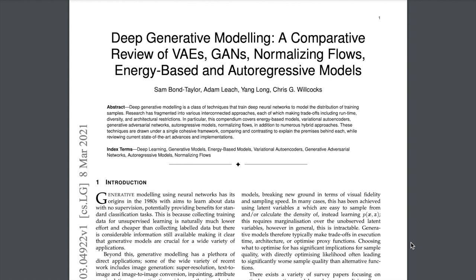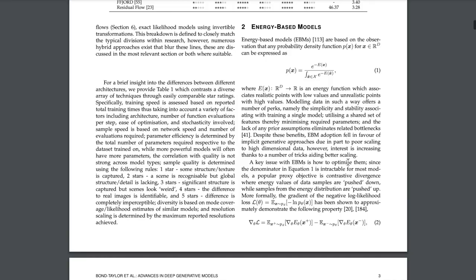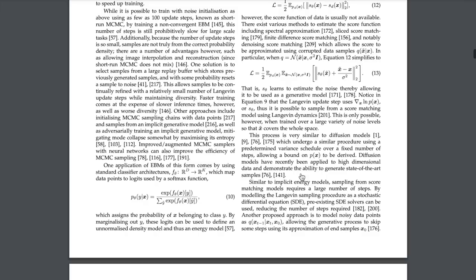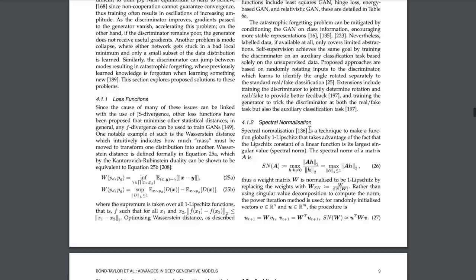Next up is a really exciting technical deep dive into deep generative modeling: a comparative review of variational autoencoders, generative adversarial networks, normalizing flows, energy-based, and autoregressive models. I'm excited to learn more about these architectures, starting from energy-based models, Boltzmann machines, and deep belief networks, then to VAEs and GANs, unifying them and thinking about deep generative modeling as one of the most exciting topics in deep learning.